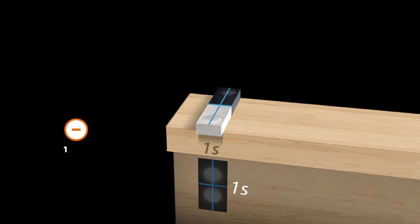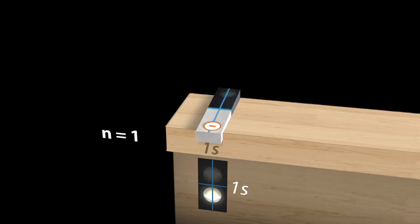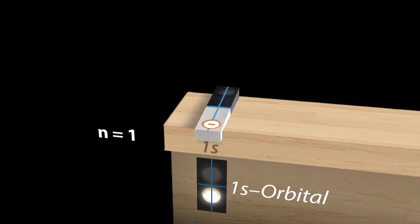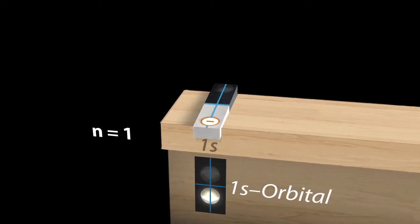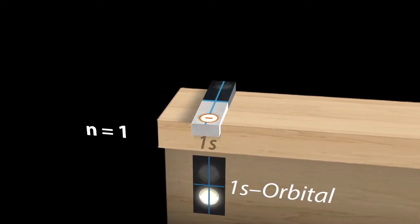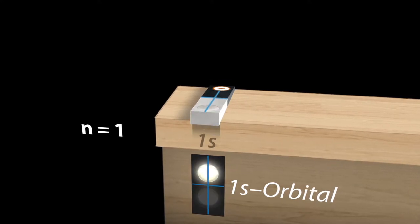The first electron occupies the vibrational state at the lowest energy level, that is, n equals 1. In a 1s orbital, spin up and spin down have almost the same energy. The spin can thus point in any direction. Superpositions may happen.